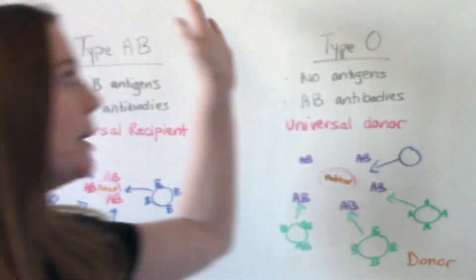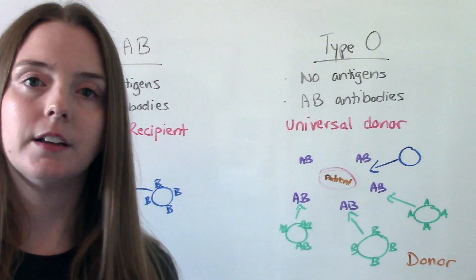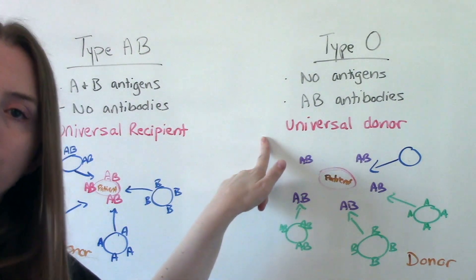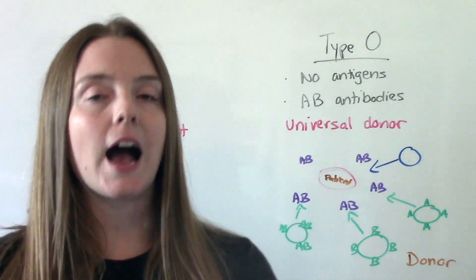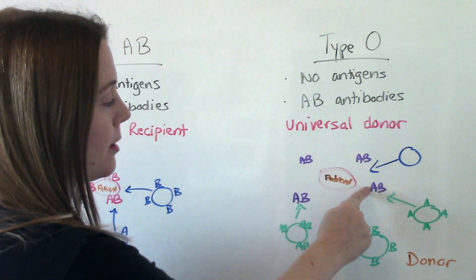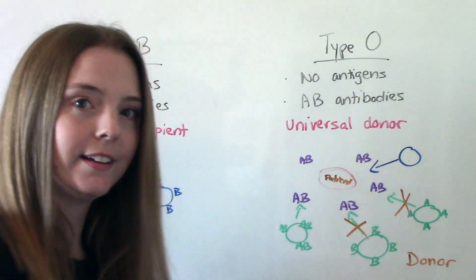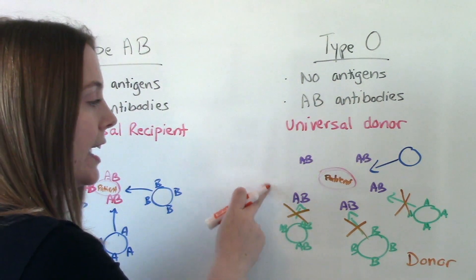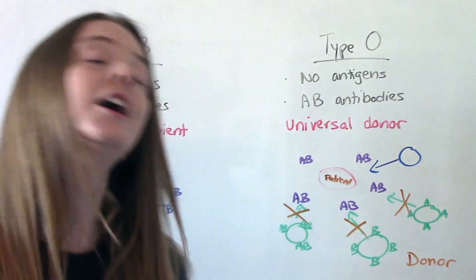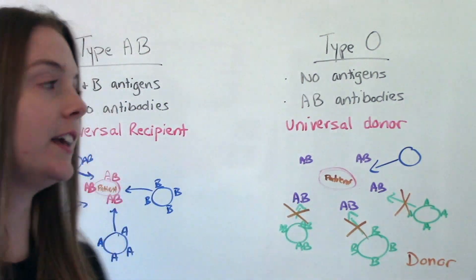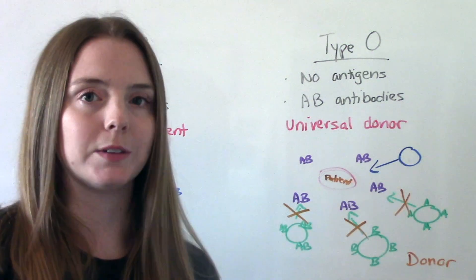On the flip side is type O. Type O doesn't actually have any antigens at all, and its antibodies are A and B. So type O is considered the universal donor because of that lack of antigens. When it comes to receiving blood though, type O is a little bit special. Because it has both A and B antibodies, it's going to fight off A, B, and AB blood types, because those antibodies will recognize those antigens on the red blood cell surface and say, you shall not pass. The only blood type that O can receive safely is O itself, because there are no antigens, so the A and B antibodies are not going to respond to anything.